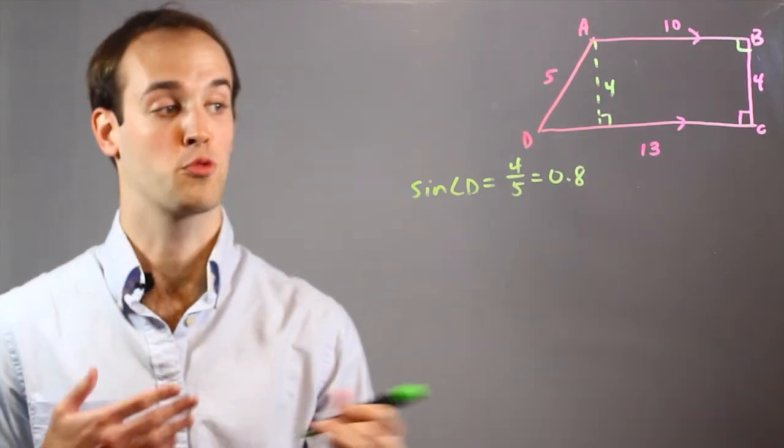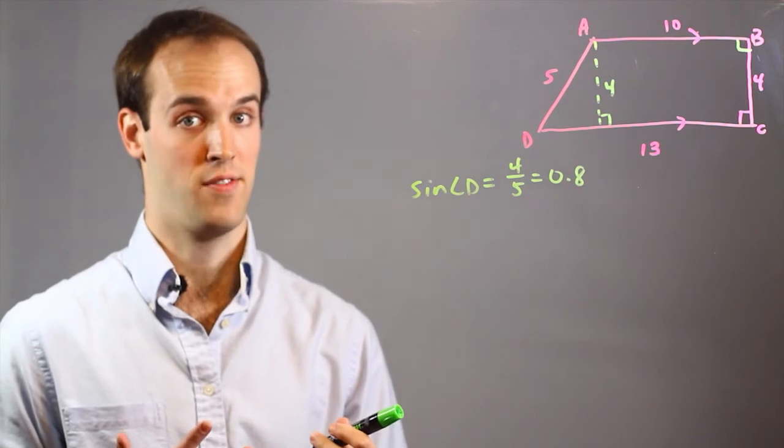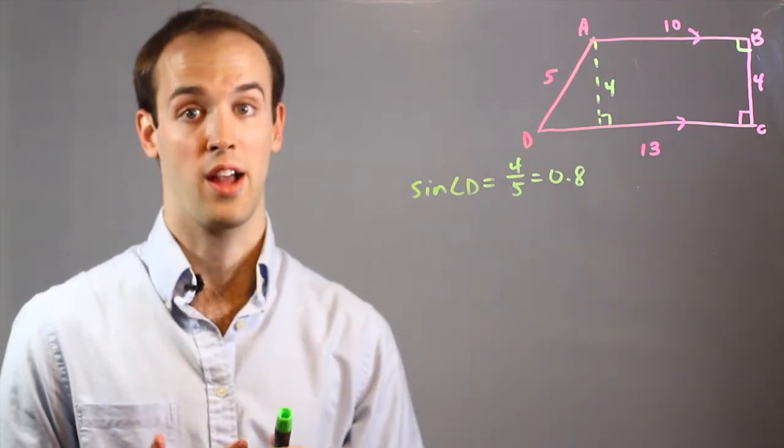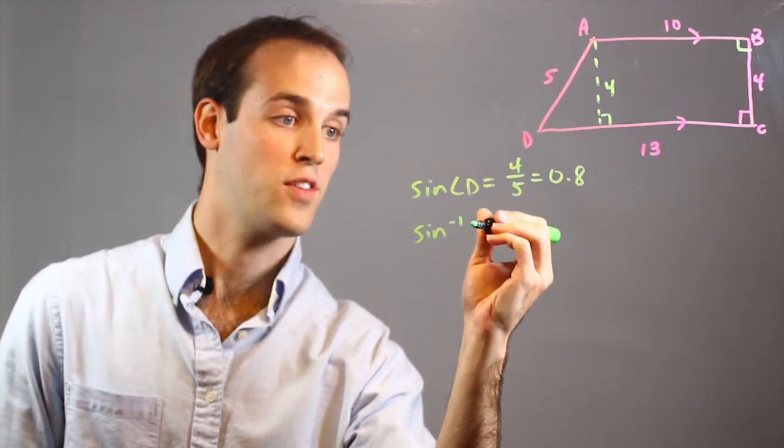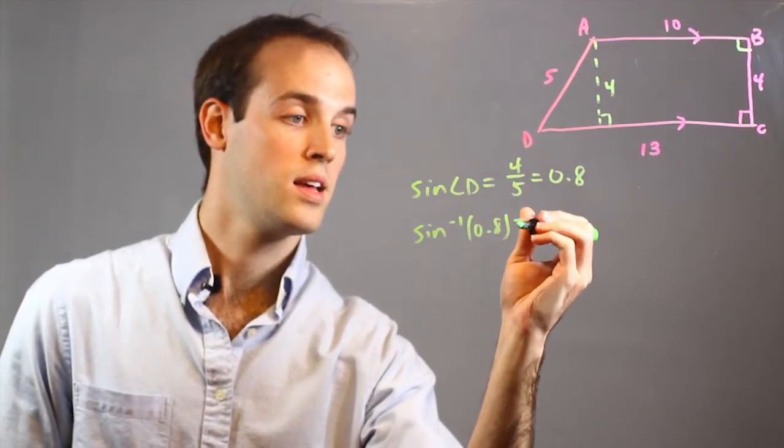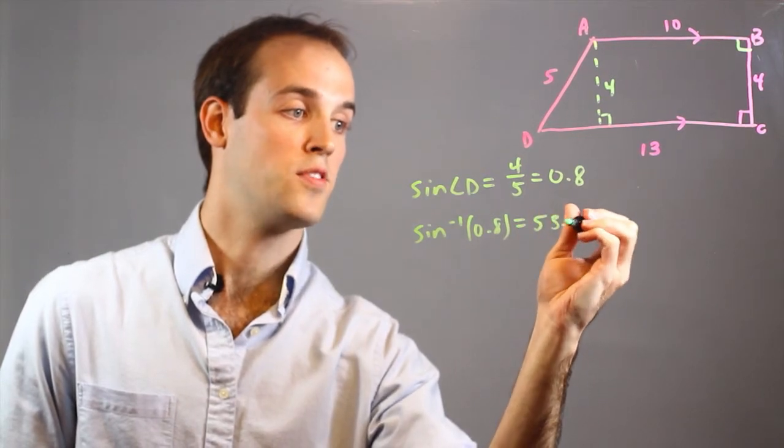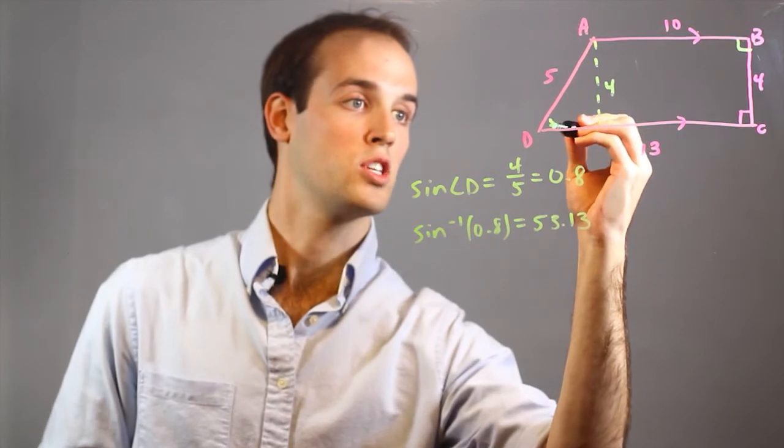And now I would turn right back around and plug this 0.8 into an inverse sine function in order to get what angle D actually equals. So sine inverse of 0.8 is equal to approximately 53.13 degrees. So now I have just found angle D.